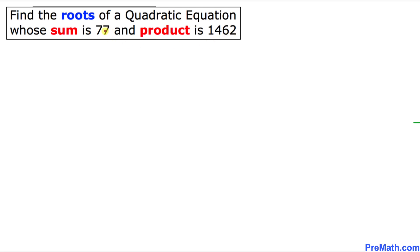So let's go ahead and get started. We know that the sum is 77, so I'm going to use S for sum is 77, and I'm going to use P as a product is 1462.